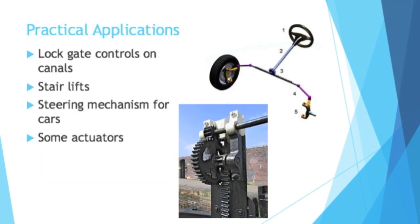Where would you see rack and pinion gears in the real world in practical applications? The picture on the bottom shows the lock gate control on a canal — that is a rack and pinion. See the large pinion, and then see the rack going up and down vertically? That opens and closes a gate on a canal, or helps lock it.